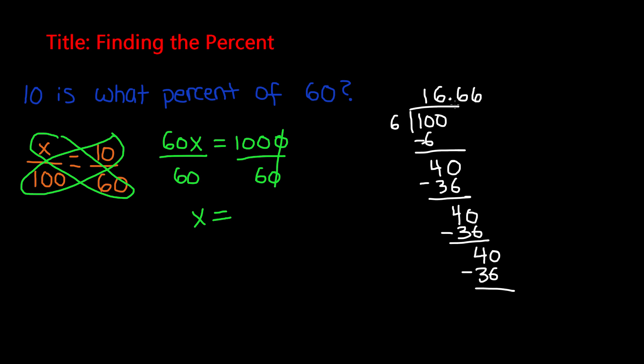When we get to the most, in most cases, whenever you have a repeated decimal, you only go up to the hundredths place. So in this case, we have our hundredths place. So we get 16.66. So x is equal to approximately 16.66. That means 10 is 16.66% of the number 60. And this is an approximate because this was a repeating decimal. So this was our first example. Let's go ahead and do our second example.